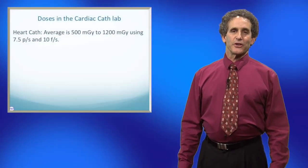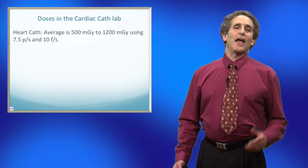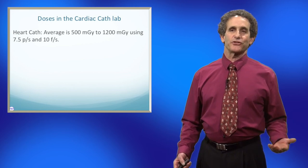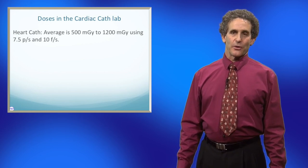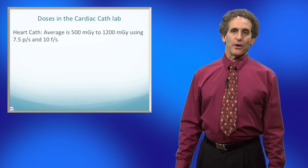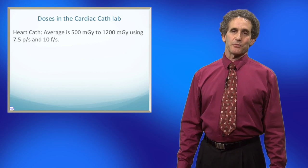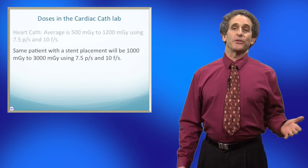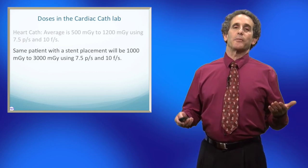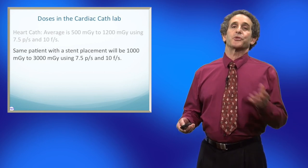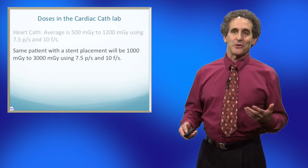Here are some of the doses that Terry gave us from her cardiac cath lab. On an average-size patient doing just an average heart cath, the dose would be between 500 milligray and 1,200 milligray using 7.5 pulses per second and 10 frames per second. On that same patient, if they then had a stent placement, it would jump up to about 1,000 to 3,000 milligray. So there's quite a dose jump when adding an intervention like that.